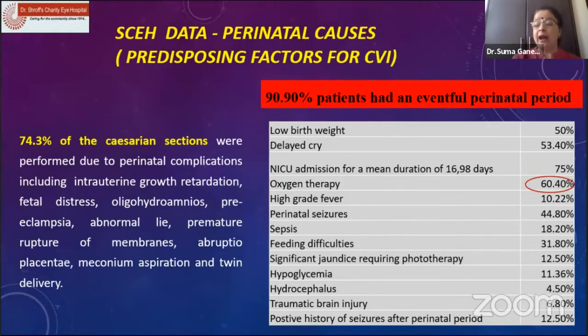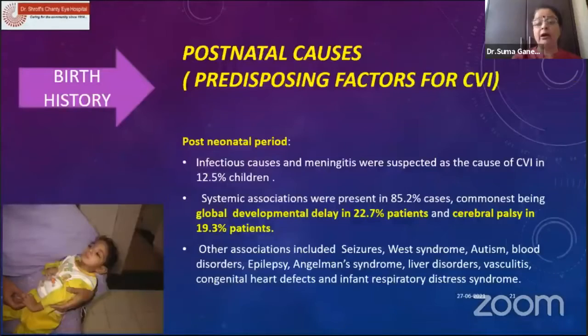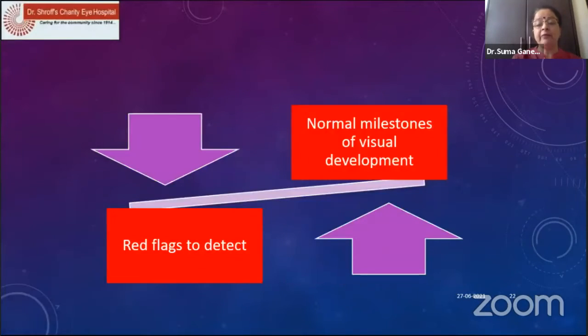90.9% had an eventful perinatal period, and all this information can be captured during history taking. Global developmental delay was seen in 22.7% of children.